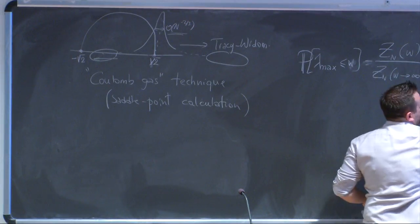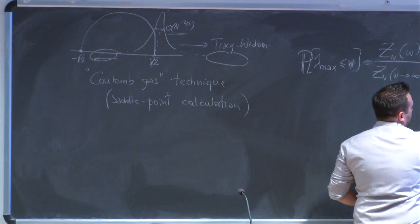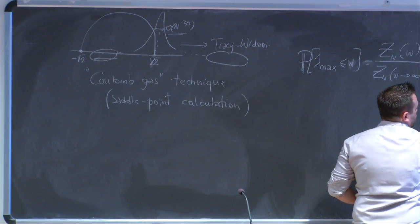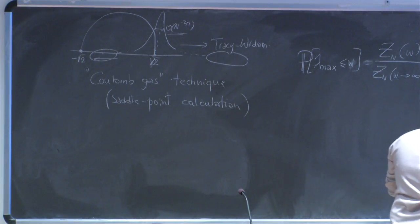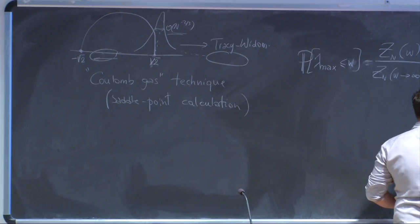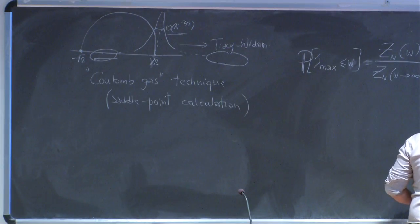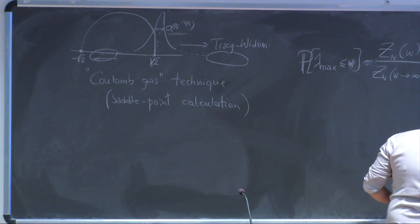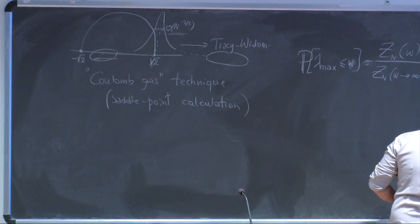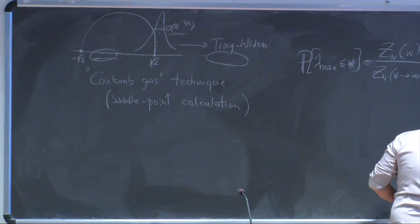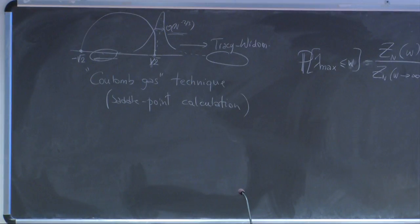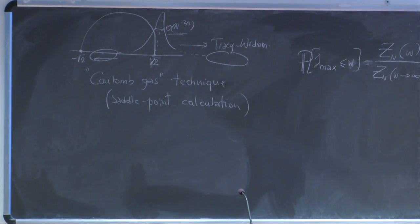We manage, after a series of manipulations, to write this object for large n in the form of a functional integral over counting functions that are positive or non-negative and normalized to one, of the exponential of minus beta n squared times a certain energy functional.